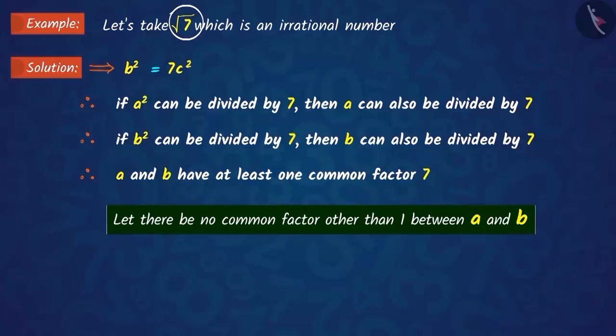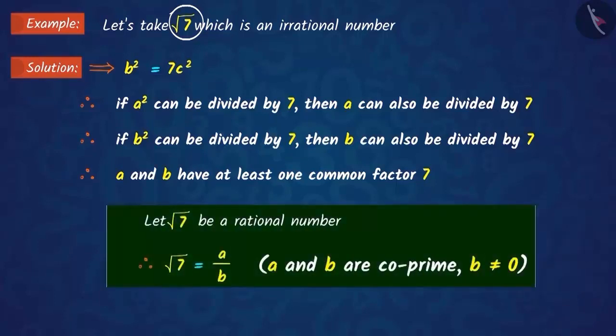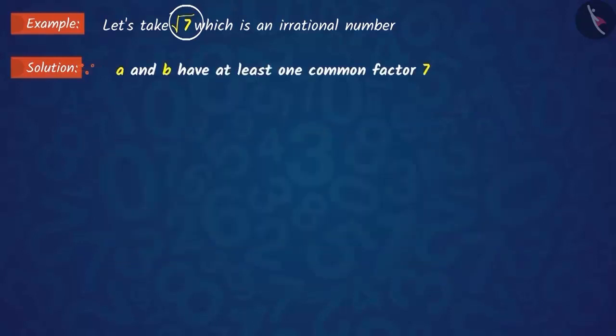This contradiction has occurred because we have made an incorrect or erroneous assumption that the square root of 7 is a rational number. Therefore, we have proven that the square root of 7 is an irrational number because we found a common factor other than 1 in a and b.